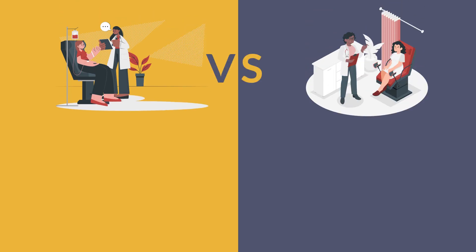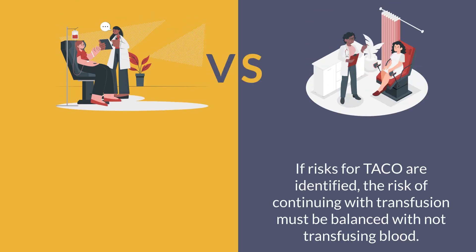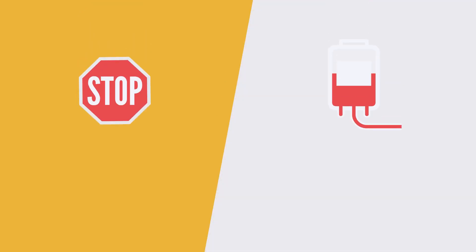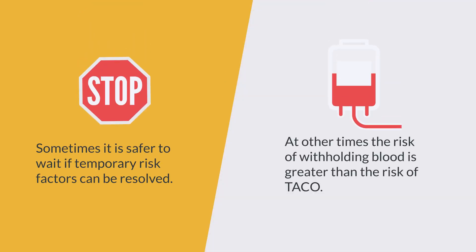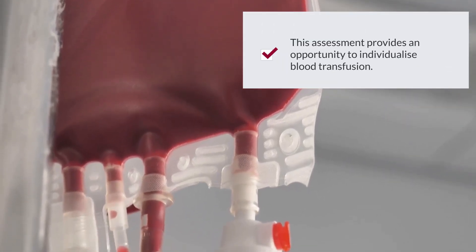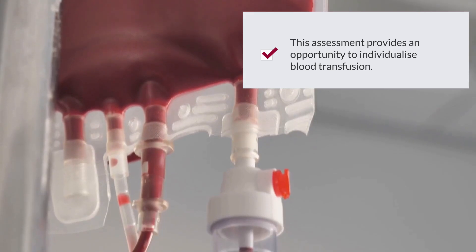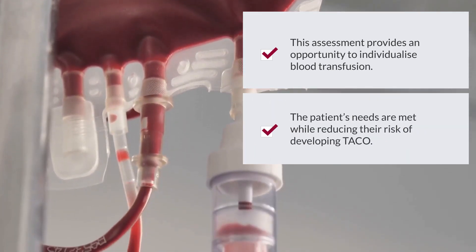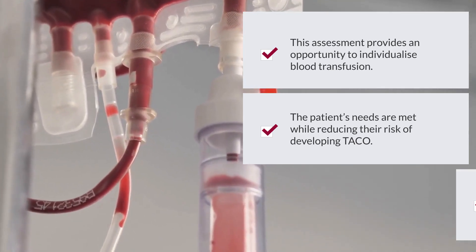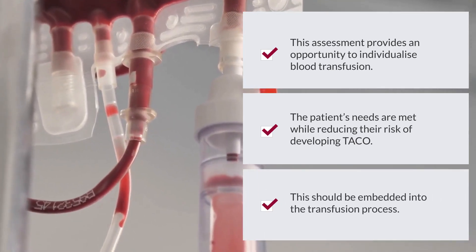If risks for TACO are identified, the risk of continuing with blood transfusion must be balanced against not transfusing blood. Sometimes it is safer to wait if temporary risk factors can be resolved. At other times the risk of withholding blood is greater than the risk of TACO. This assessment provides an opportunity to individualise blood transfusion so the patient's needs are met while reducing their risk of developing TACO, and this should be embedded into the transfusion process.